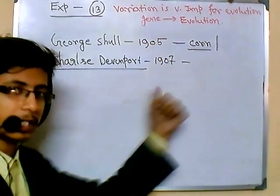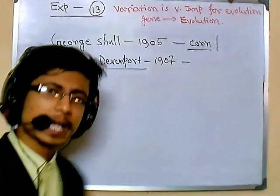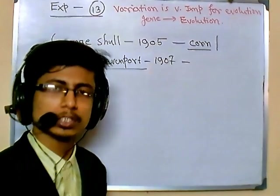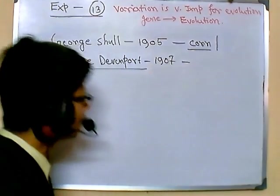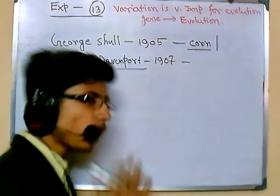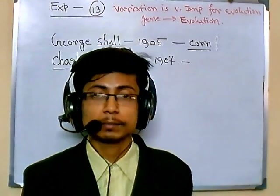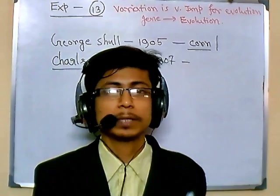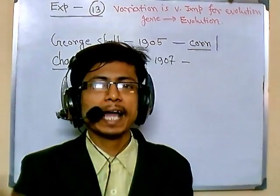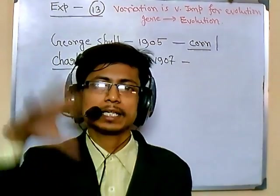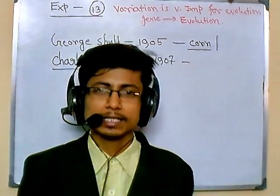Charles Davenport, many years after Mendel's experiments, thought in 1907 whether he could apply Mendelian laws to the genetic inheritance of human beings. The problem with using humans as experimental organisms is that it is highly unethical — nobody would allow that. So what we can do is back-calculate by looking at a whole family history.